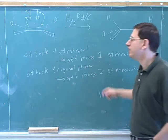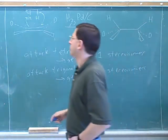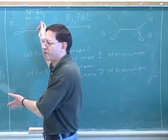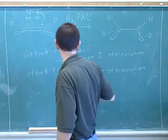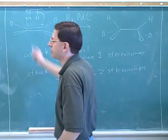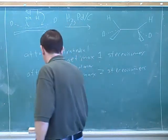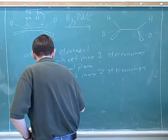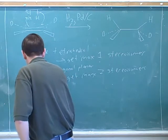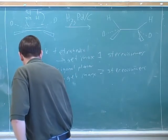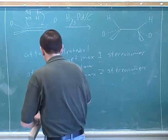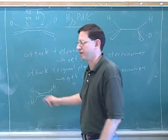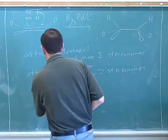Why do I say maximum? Well, if we weren't forming stereocenters here, then there would only be one product. We can only get two if we're actually forming stereocenters. If we were just attacking ethylene and not forming any stereocenters, then we'd only get one product. But there's a maximum of two.